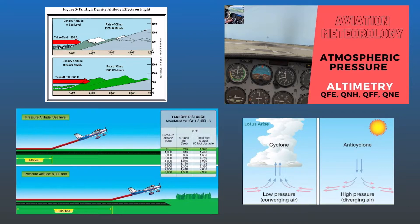You should know about the pressure lapse rate in cold and warm air, and the terms anticyclones and cyclones including the weather observed in both. You'll also be asked definitions and weather conditions in a ridge, trough, and col, and definitions of isobars and isallobars. From altimetry, read about the temperature and pressure errors of an altimeter — what happens when flying from high to low temperature or low to high pressure, and vice versa. You can also be asked direct definitions of density altitude and the effects of density on aircraft performance.